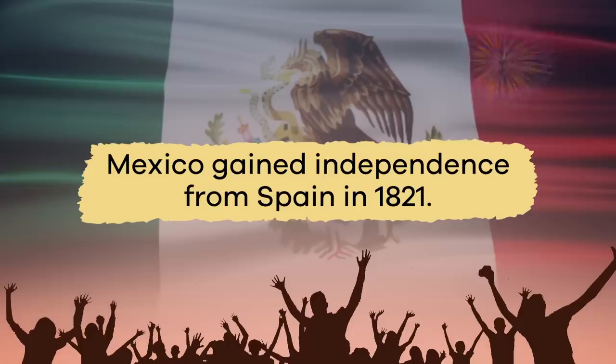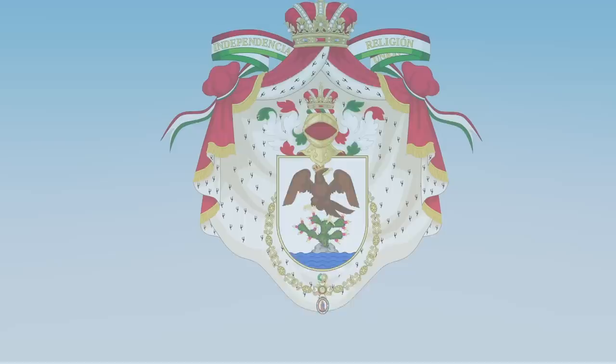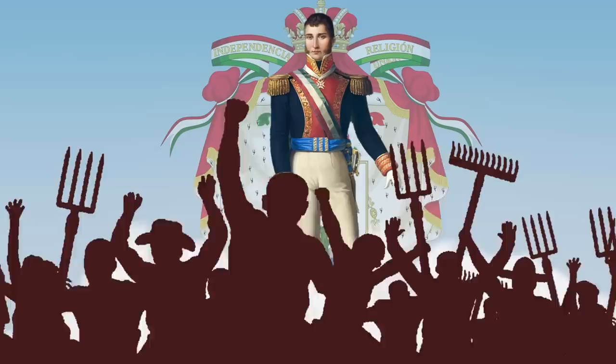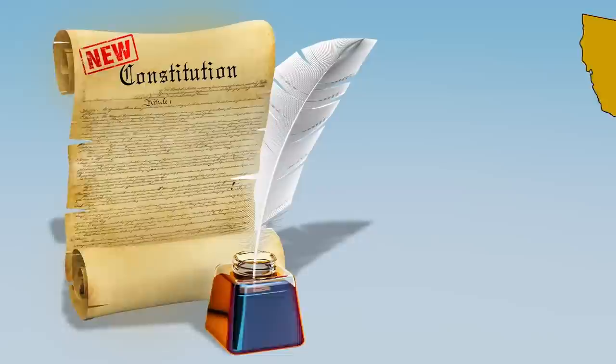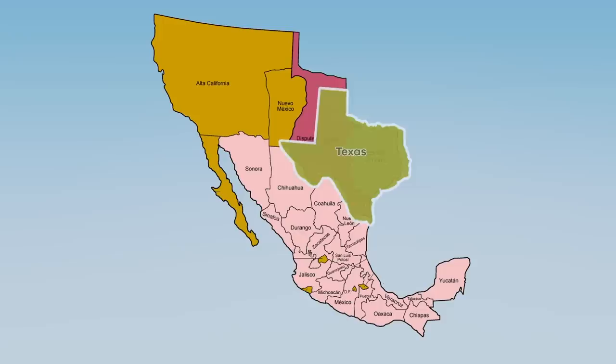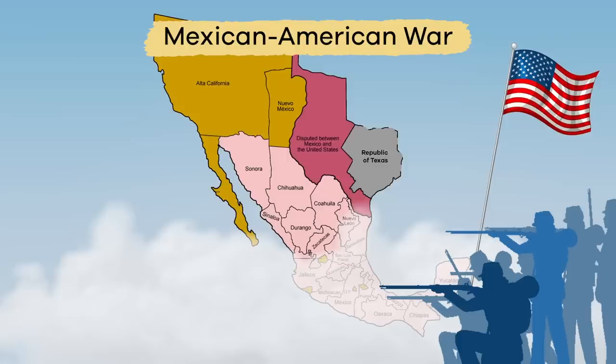In more recent history, Mexico gained independence from Spain in 1821 and drafted a constitution. Problems arose when a new leader declared himself emperor; he was overthrown a year later and a new constitution established a republic-style government with 19 states and four territories. At the time, Texas was part of Mexico and wanted independence too, leading to the Mexican-American War.